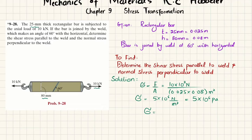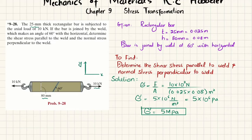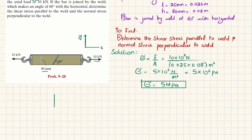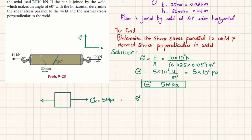Converting to megapascals gives 5 MPa. We have only normal stress in the x-direction: σx = 5 MPa. This is the x-direction and this is the y-direction. There is no other load applied, so if we draw the state of stress on an element, σx = 5 MPa. In this case, σy = 0 and there is no shear stress, so τxy = 0.